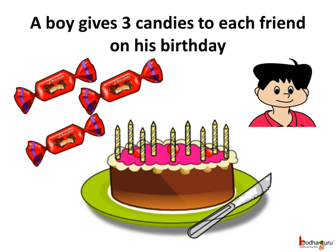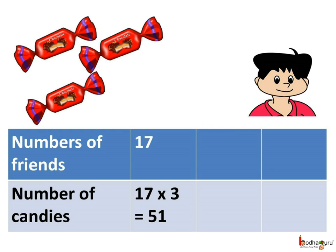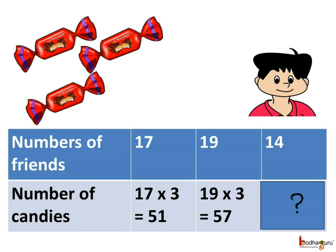Let us take another case. A boy gives 3 candies to each of his friends on his birthday. Two years ago he had 17 friends and gave away 17 multiplied by 3, which is equal to 51 candies. Assuming he gave away 19 multiplied by 3, which is equal to 57 candies. And this year he has 14 friends, so he needs 14 multiplied by 3, which is equal to 42 candies.